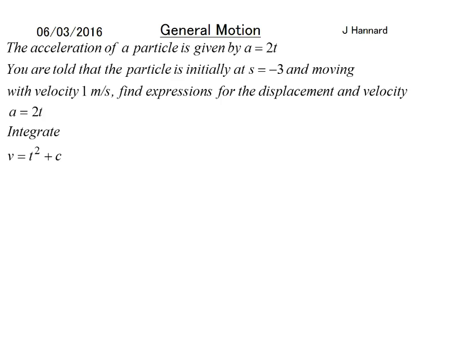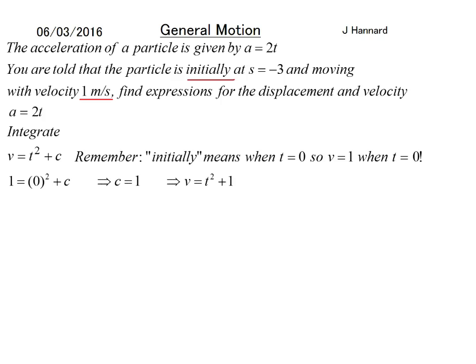But we're given some information that it's initially moving at 1 meter per second. If we set t equal to 0, we can set v equal to 1. Remember, initially means when t = 0, so v = 1 when t = 0. So C must equal 1. And then you can rewrite that as v = t² + 1.